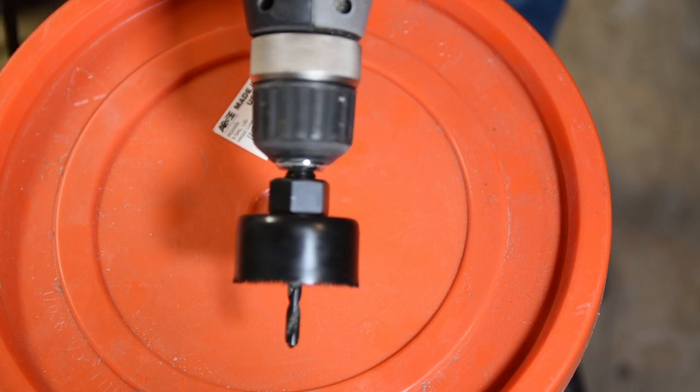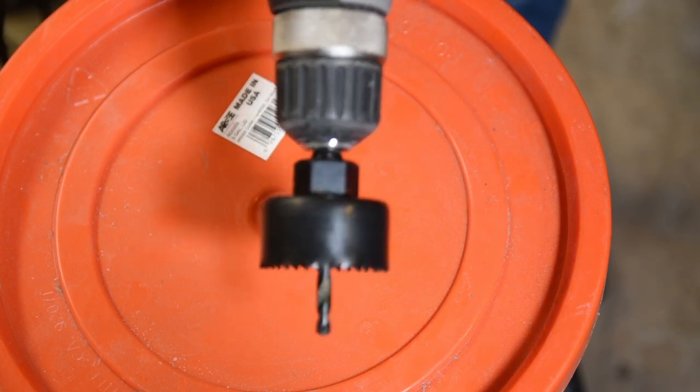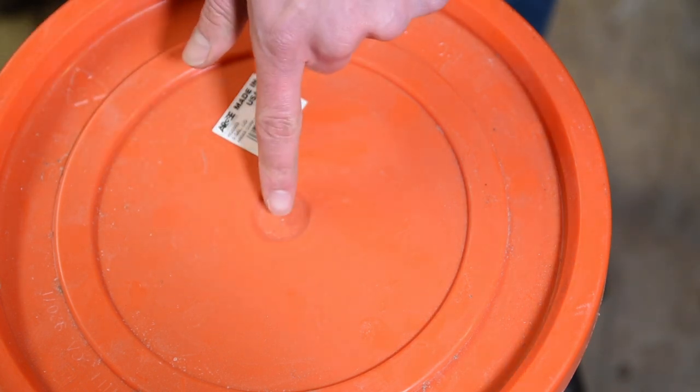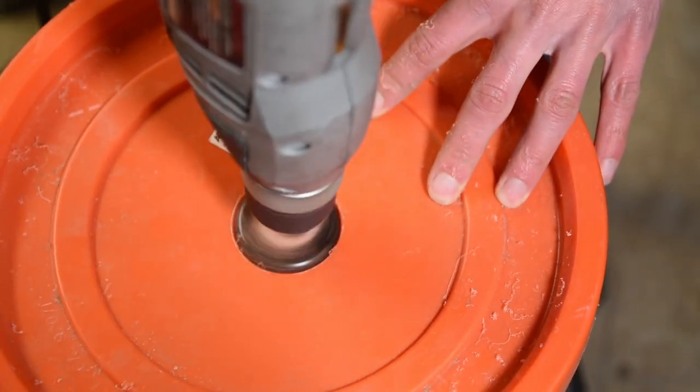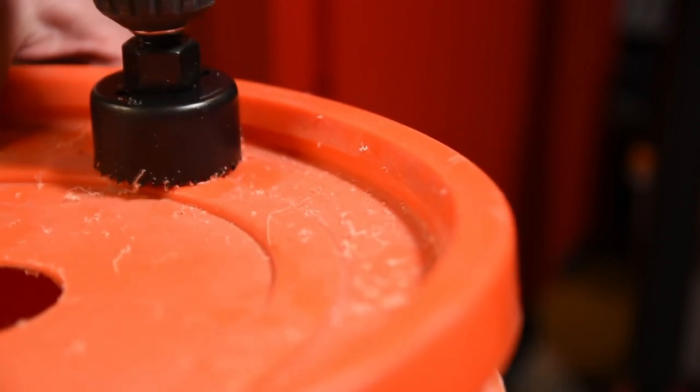I'm using a 2-inch hole saw that you can find at the hardware store, but I've linked to one if you can't. The first hole goes right in the center of the lid. The second goes right on the edge where the lid meets the bucket wall.